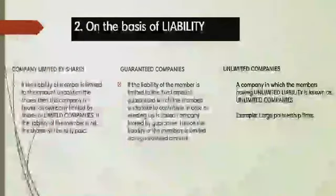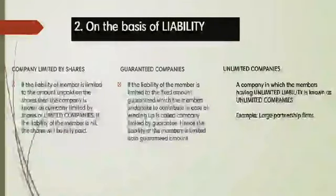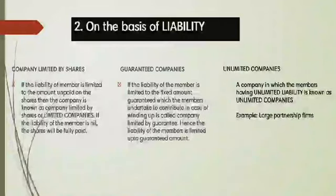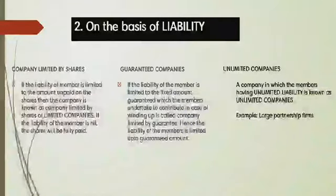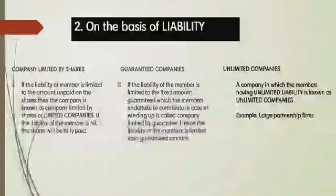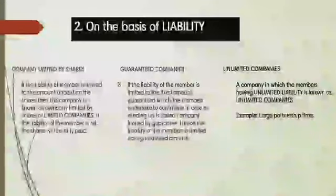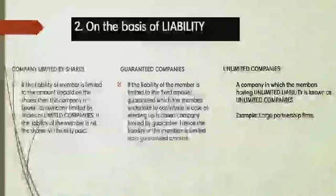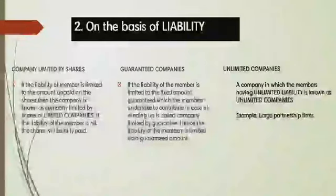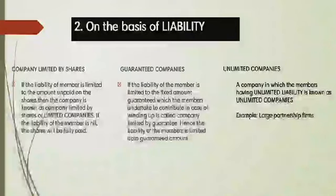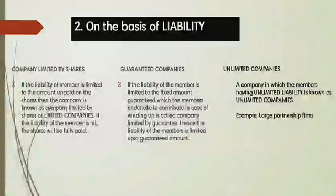The next classification is on the basis of liability. We can classify companies into three types: company limited by shares, guaranteed companies, and unlimited companies. Company limited by shares means the liability of the members is limited up to the value of the shares held by them.